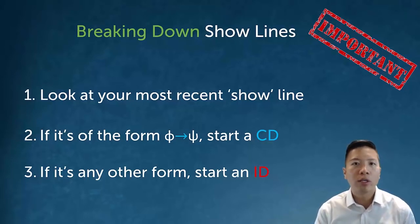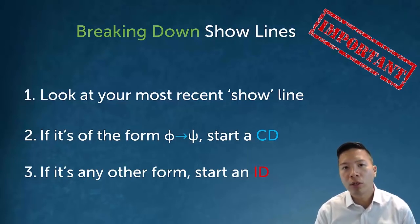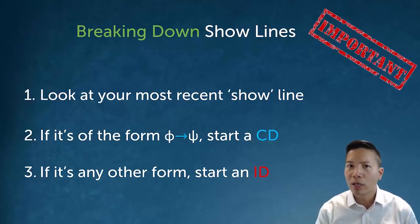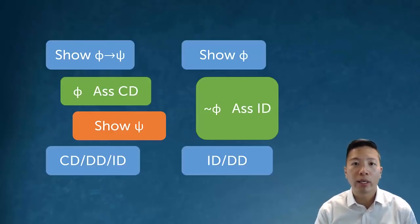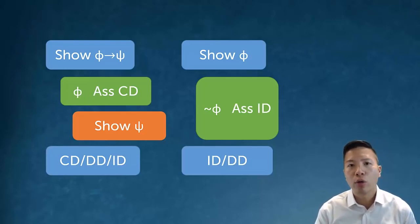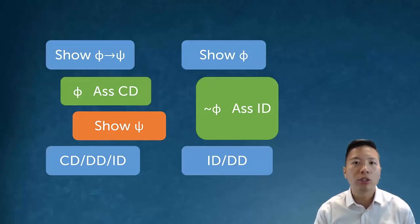The most important skill you'll have to develop in derivations is going to be breaking down your show line. Because we allow for mixed derivations, we can approach our show lines in the same algorithmic way every time. Here's the pattern: always look at your most recent show line. If it's a conditional, you immediately start a conditional derivation. If it's anything other than a conditional, start an indirect derivation. This works because of mixed derivations — what if I start an indirect derivation and then actually find exactly what I'm looking for directly? It doesn't matter; we can still finish the derivation any way we want. In general, if your show line is phi arrow psi, assume CD and show the consequent. If your show line is anything other than that, just do an assume ID and work towards the final answer.